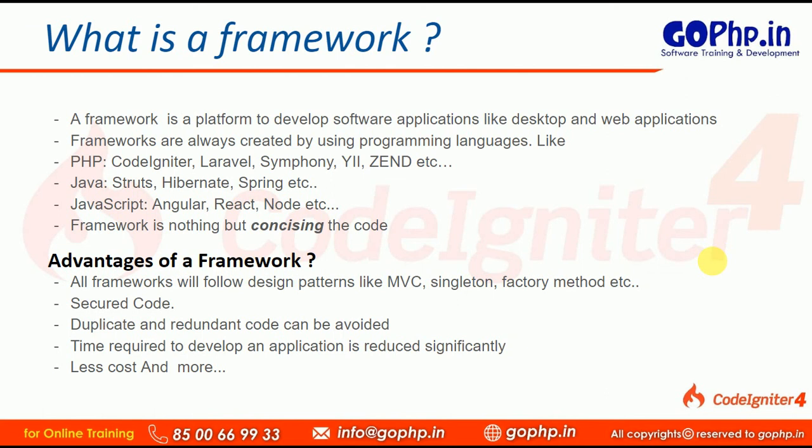In simple terms, a framework is about concising the code — that is, reducing the number of lines of code. For example, to validate an email ID in core PHP you might write 10 to 12 lines of code. In CodeIgniter, just one line of code is enough to validate an email ID, and one line is enough to validate a mobile number. In core PHP you have to build everything from the bottom up, but in a framework much of the code is already baked in — you just use it.